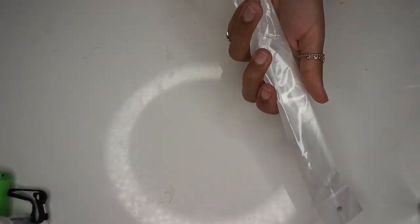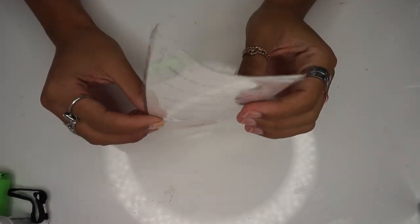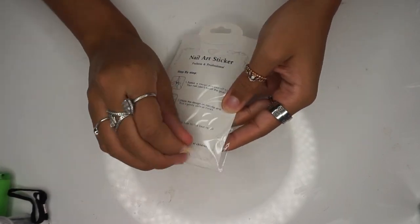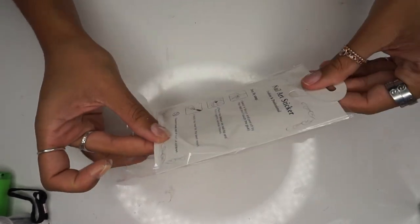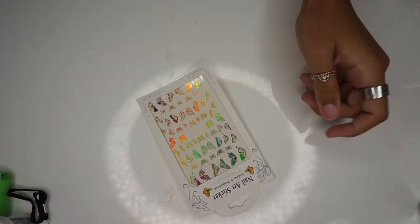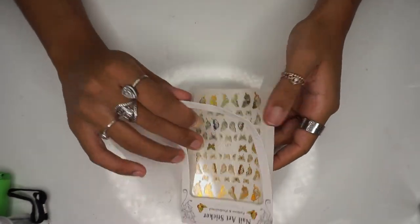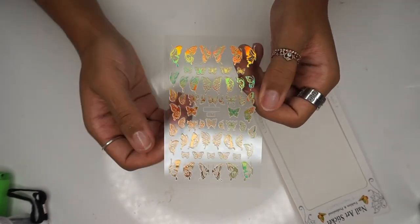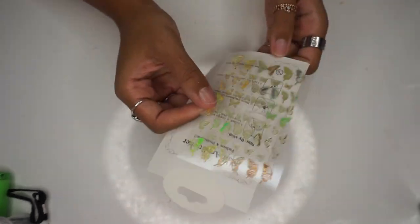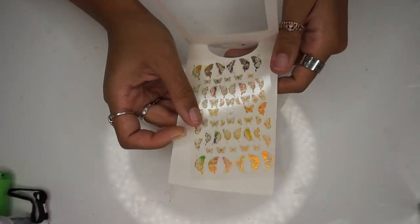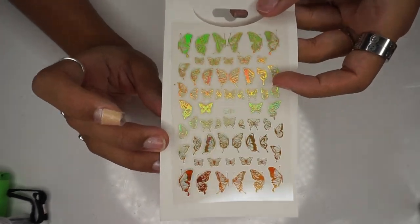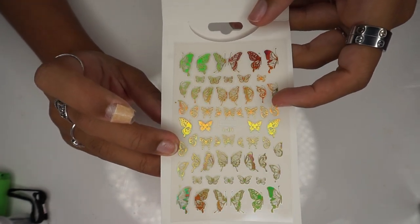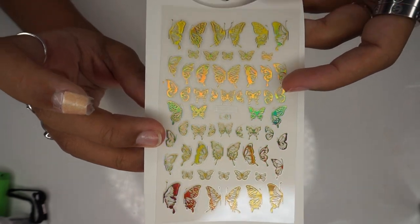Next is the one sheet butterfly nail sticker. This was one dollar. I wanted to show you guys how it came in the packaging because it was bent up a little bit, but they're stickers so I don't think it really matters. Here's what the sheet looks like. They're really pretty, holographic butterflies. For one dollar you definitely can't beat it. If you go on Amazon they'll be like five ninety nine or eight ninety nine.